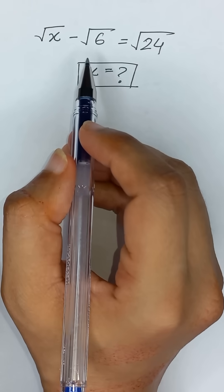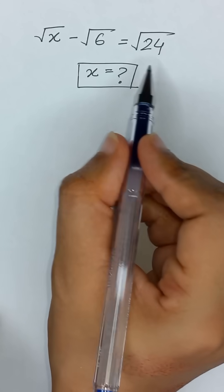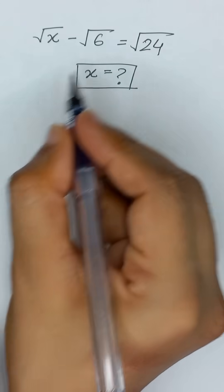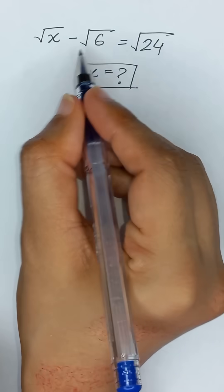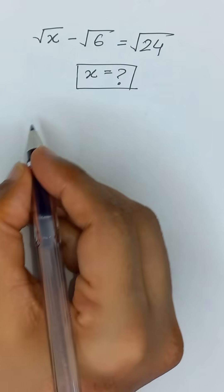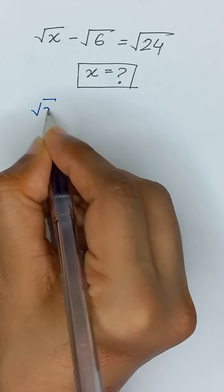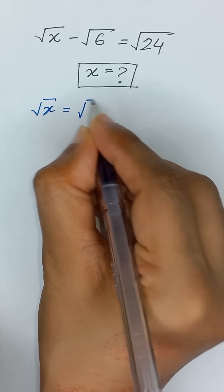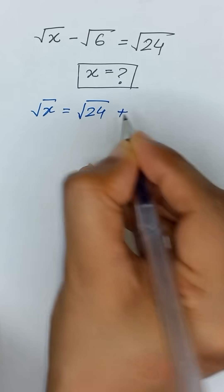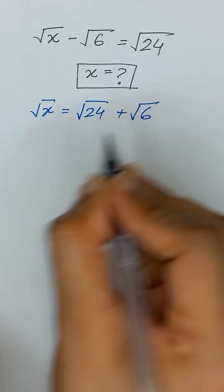We have square root of x minus square root of 6 is equal to square root of 24, and we will solve for x. First, I will take the negative square root of 6 to the right hand side, so it will become square root of x is equal to square root of 24 plus square root of 6.